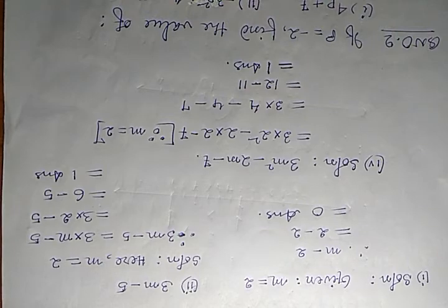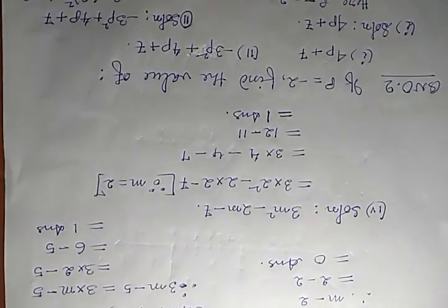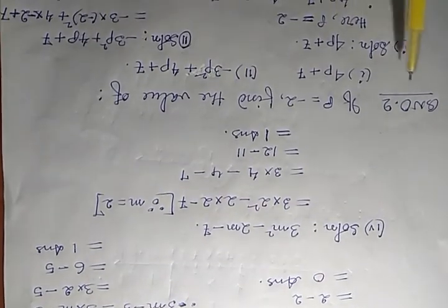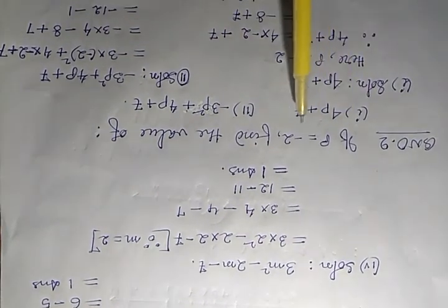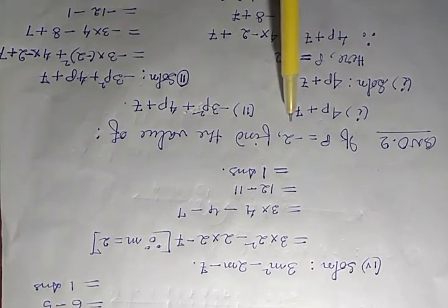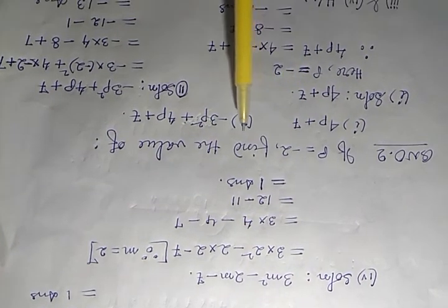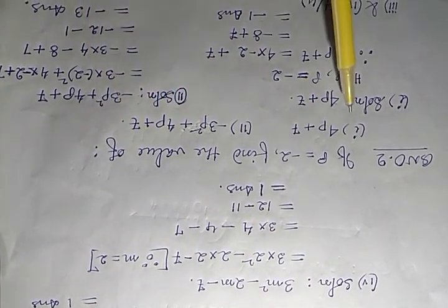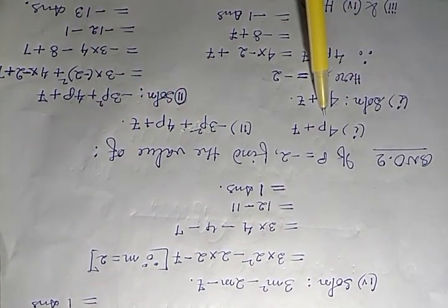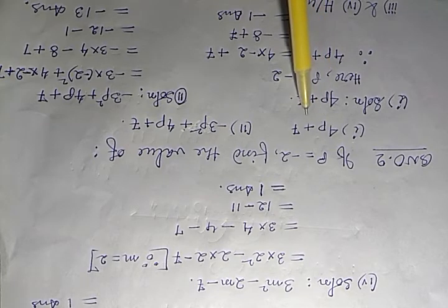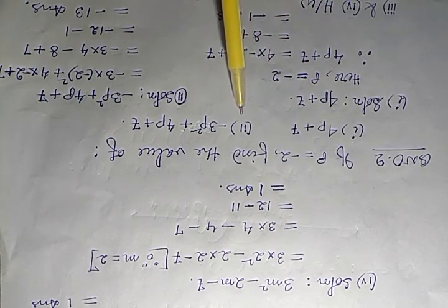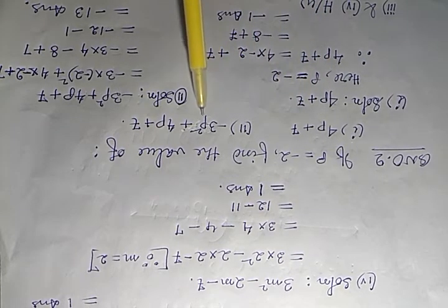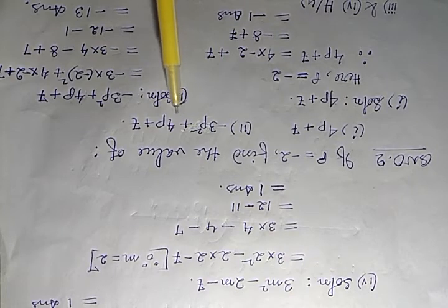Next, let's see question number 2. If p equals minus 2, find the value of: Roma number 1 — 4p plus 7; and Roma number 2 — minus thrice p squared plus 4p plus 7.